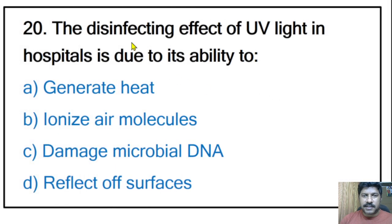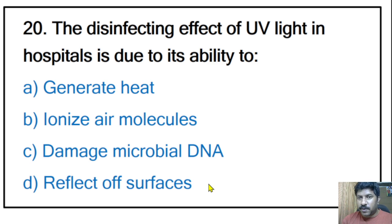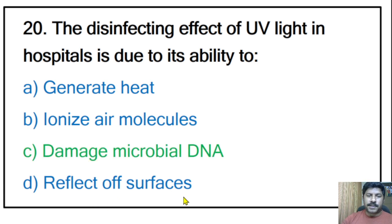Twentieth question: the disinfecting effect of UV (ultraviolet) light in hospitals is due to its ability to generate heat, ionize air molecules, damage microbial DNA, or reflect off surfaces? The correct answer is option C — damage microbial DNA. UV light damages microbial DNA, which is why it is used to sterilize materials that may be damaged by heat or chemicals.